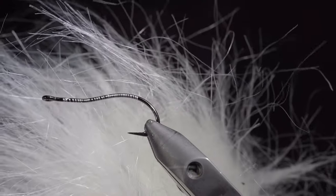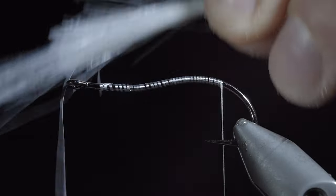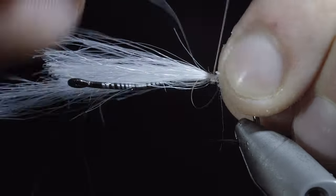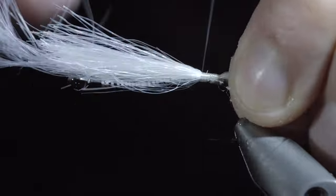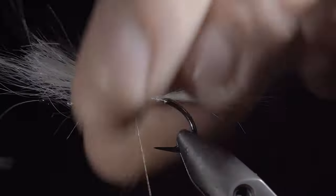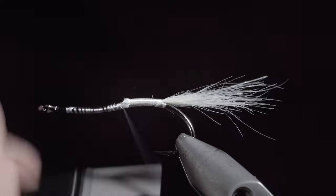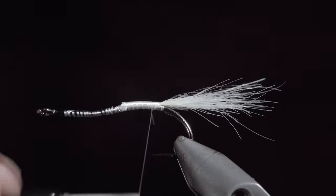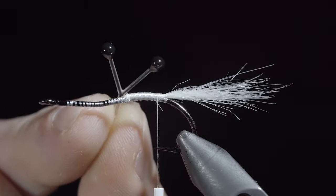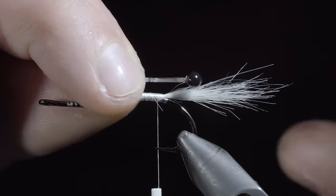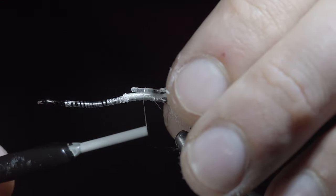We'll then grab some white craft fur, select a small pinch and secure it to the back of the fly. We'll then snip the excess free, secure it down, and grab a pair of monofilament eyes. Here I've painted the ends black, securing it tightly to the back of the fly.